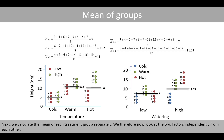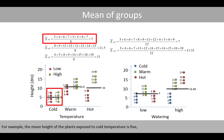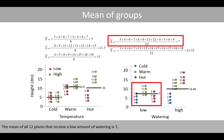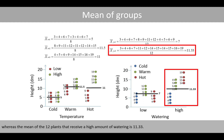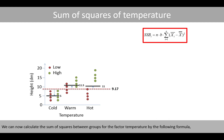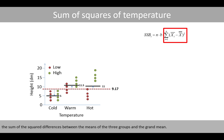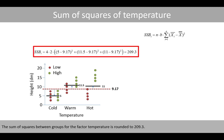Next, we calculate the mean of each treatment group separately, looking at the two factors independently from each other. For example, the mean height of the plants exposed to cold temperature is 5, and the mean height of the 8 plants grown in warm temperature is 11.5. We can now calculate the sum of squares between groups for the factor of temperature. Where n is the number of observations in each group and B is the number of levels in the watering group, multiplied by the sum of squared differences between the means of the three groups and the grand mean. The sum of squares between groups for temperature is rounded to 209.3.